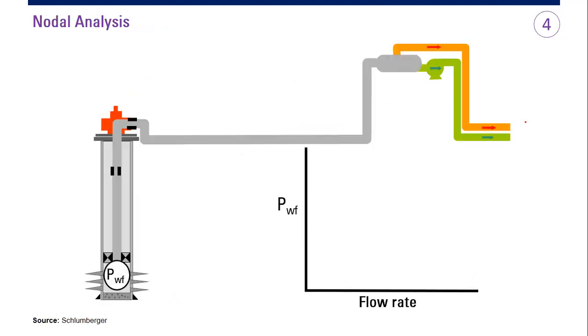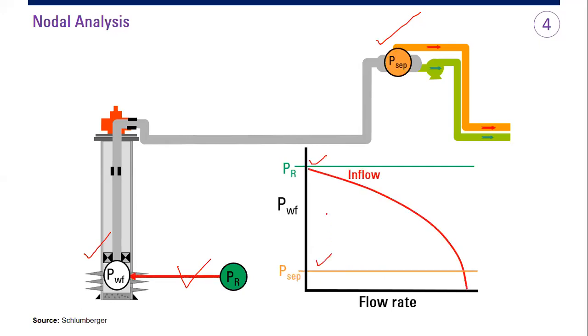Basically the same. So you have reservoir, you have your well, you have your separator, you have the pressure data for each nodal side, each node. So you have the first node, the reservoir, you know the reservoir pressure, you know the separator pressure, and then you produce your well.